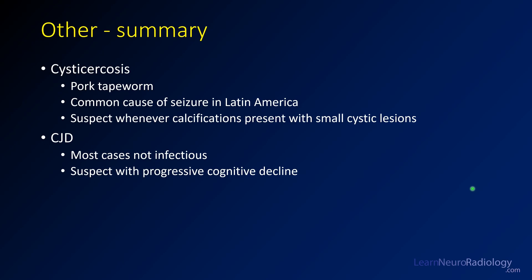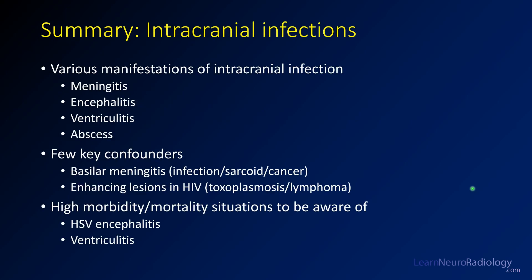In summary, those are two unusual infections with distinctive imaging appearances. Cysticercosis is caused by tapeworm and is the most common cause of acquired seizure in Latin America — suspect it whenever calcifications are present with small cystic lesions. In CJD, remember that most cases are not infectious but rather spontaneous; suspect it in cases with rapid aggressive cognitive decline. More broadly, intracranial infections can manifest as meningitis, parenchymal involvement, or both. When infection involves the ventricles, it is called ventriculitis, which carries high morbidity and mortality. Walled-off infections within parenchyma or subdural/epidural space are abscesses.